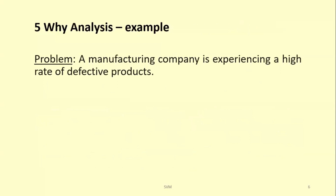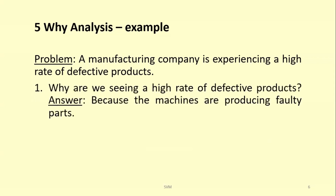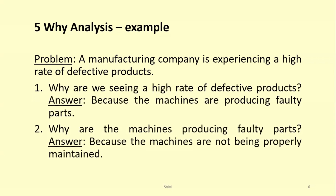Let us briefly understand the 5-Why analysis with an example. Consider a manufacturing company facing a high rate of defective products. First why: Why are we seeing a high rate of defective products? Answer: because the machines are producing faulty parts. Second why: Why are the machines producing faulty parts? Answer: because the machines are not being properly maintained.